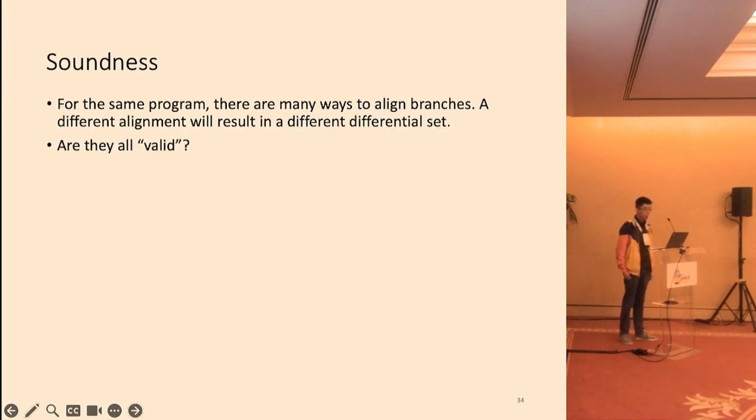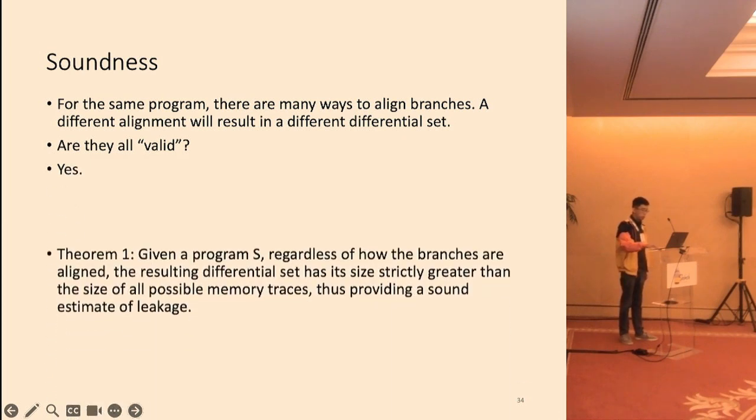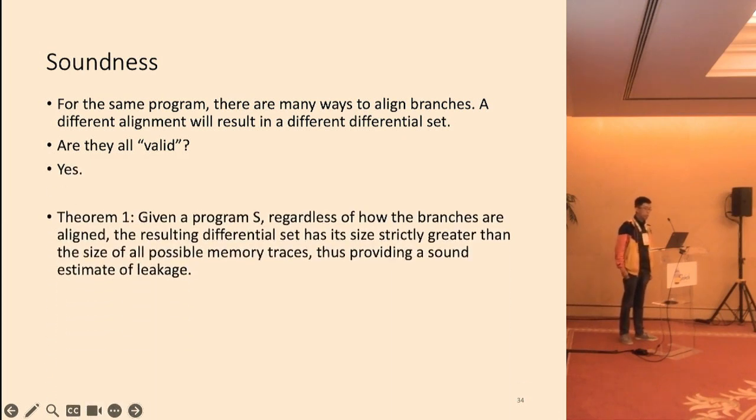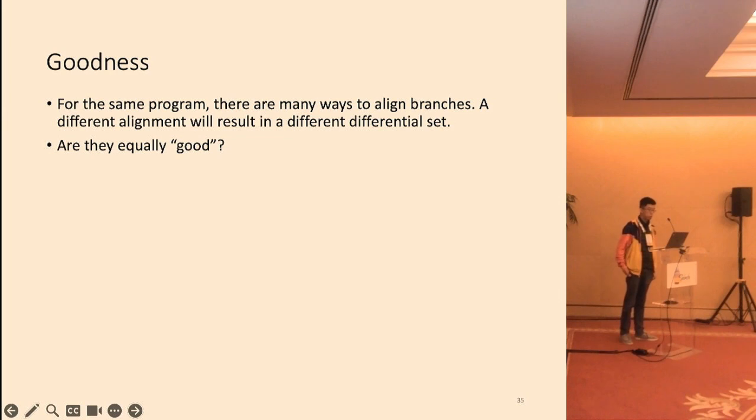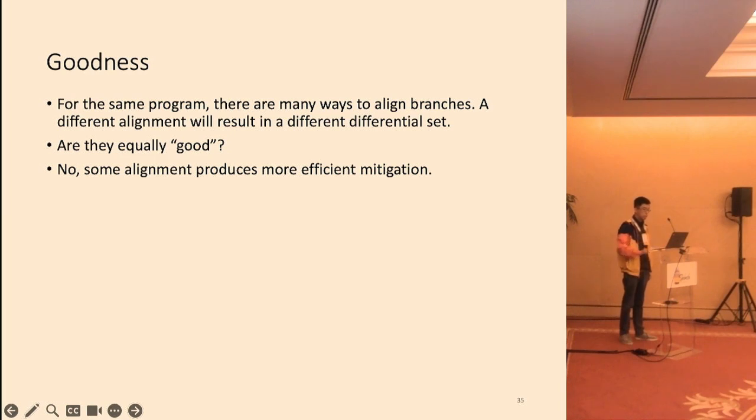For the same program, there are many ways to align branches. A different alignment will result in a different differential set. Are they all valid? The answer is yes. We have a theorem that states, given a program S, regardless of how the branches are aligned, the resulting differential set has its size strictly greater than the set of all possible memory traces, thus providing a sound estimate of leakage. Another natural question to ask is whether the different alignments are equally good. The answer is no, because some alignments produce more efficient mitigations.